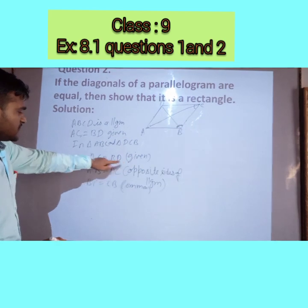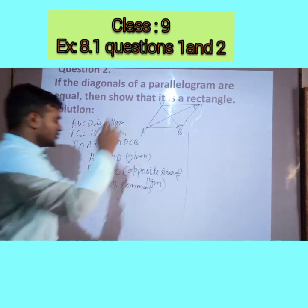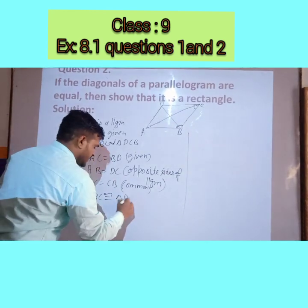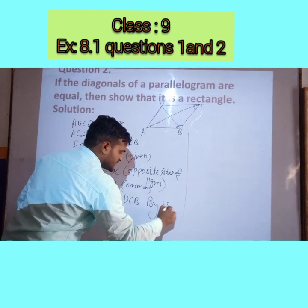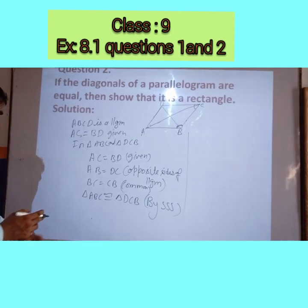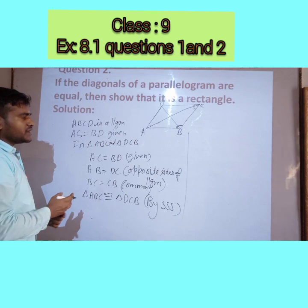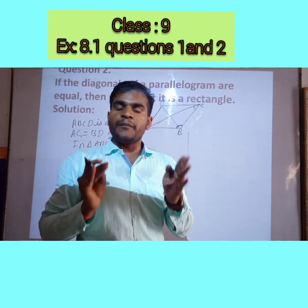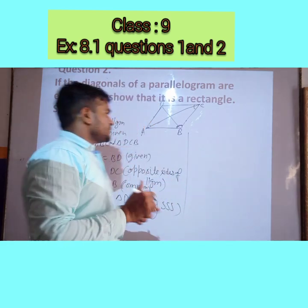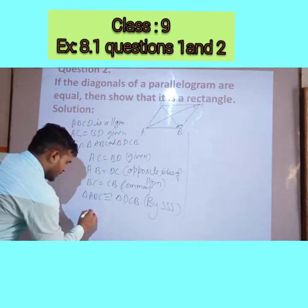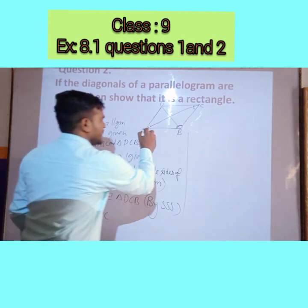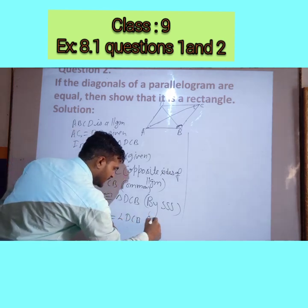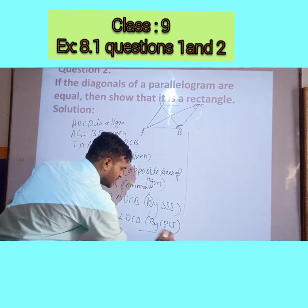Since all corresponding sides are equal, triangle ABC is congruent to triangle DCB by SSS congruence. In congruent triangles, corresponding parts of congruent triangles are equal (CPCT). So angle ABC = angle DCB — this is equation number 1.